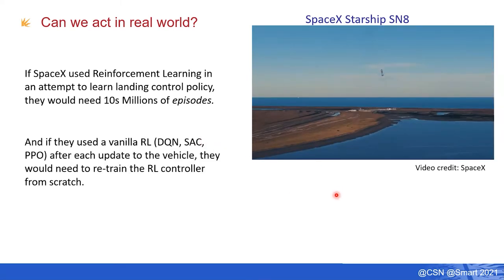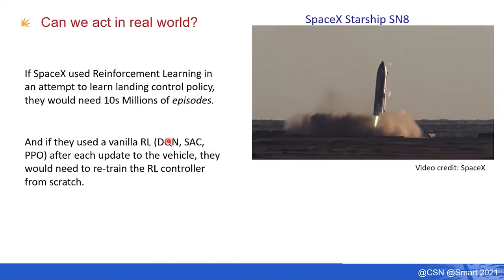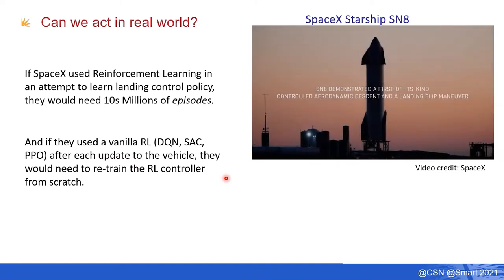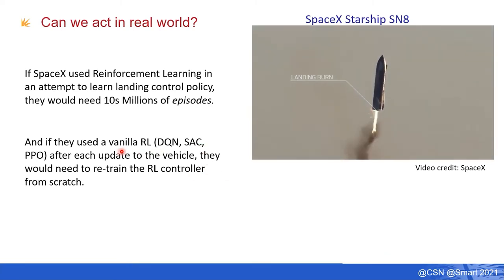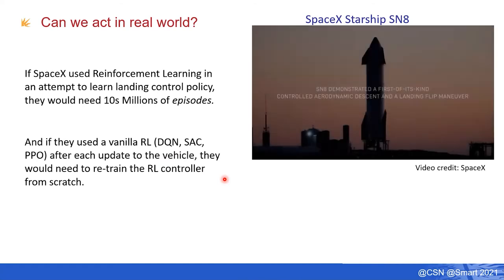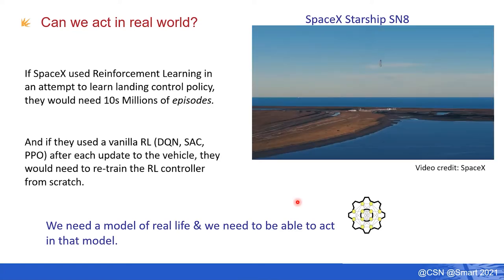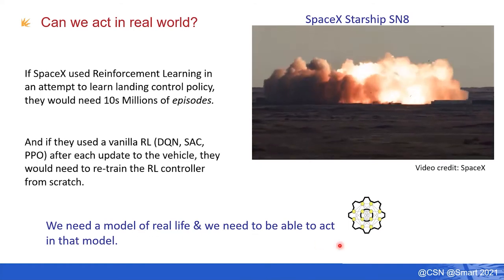Even more importantly, even if you trained in some sort of model using vanilla reinforcement learning — DQN, SAC, or PPO — if something changes, for example you change the flaps or the size of the vehicle, you have to redo the process from scratch, because those algorithms don't really reason. They perform a brute-force map from what they see into actions. This tells us we need a model of real life and the ability to act within that model.